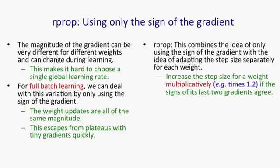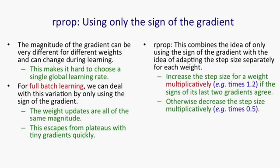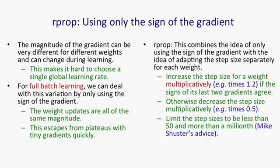This is like Robbie Jacobs' adaptive weights methods, except that we're going to do a multiplicative increase here. If the signs of the last two gradients disagree, we decrease the step size multiplicatively, and we make that decrease more powerful than the increase so that we can die down faster than we grow. We need to limit the step sizes. Mike Schuster's advice was to limit them between 50 and a millionth. I think it depends a lot on what problem you're dealing with. If you have a problem with some tiny inputs, you might need very big weights on those inputs for them to have an effect. If you're not dealing with that kind of problem, having an upper limit on weight changes much less than 50 would be a good idea.